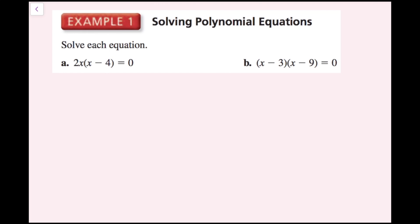For part A, I have 2x times the quantity x minus 4 equals zero. This is an example where I can use my zero product property. I have something times something else equaling zero, so at least one of these things has to be equal to zero. I'm going to break this up into: 2x equals zero, or x minus 4 equals zero.